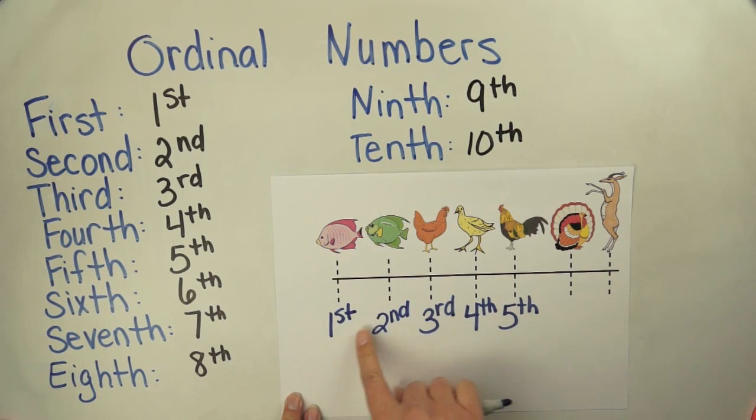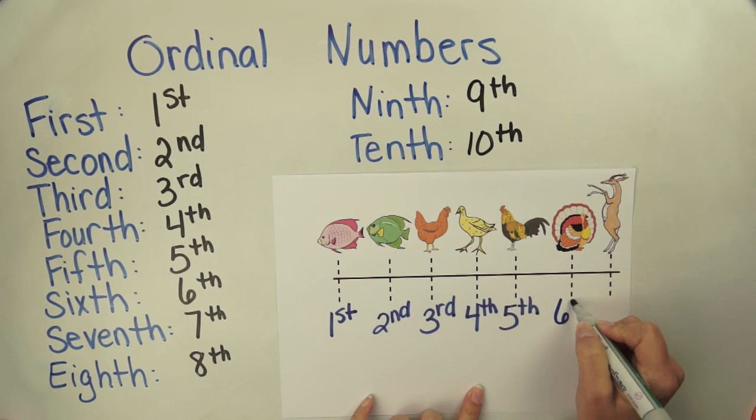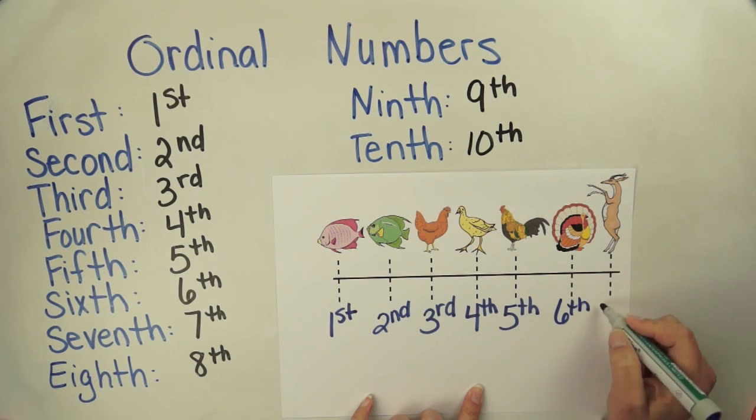And we can finish this out. 1st, 2nd, 3rd, 4th, 5th. Next is 6th. And in this case, the last animal is in the 7th place.